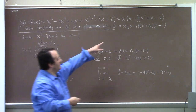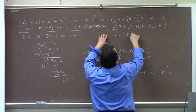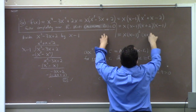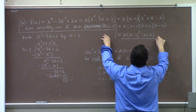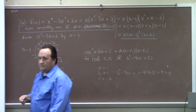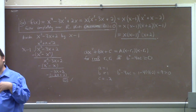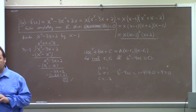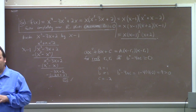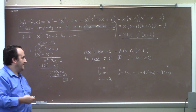The factor x - 1 has multiplicity 2. We'll need to talk more about multiplicity when we get to graphing rational functions and topics like holes in the graph.